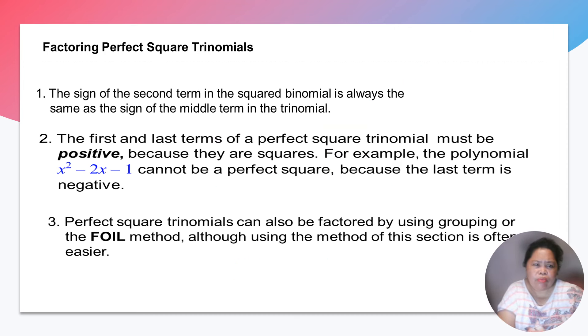Now let's have this one. So how do we factor perfect square trinomial? So first, the sign of the second term in the squared binomial is always the same sign of the middle term in the trinomial. The first and last terms of the perfect square trinomial must be positive because they are square. So for example, the polynomial x squared minus 2x minus 1 cannot be perfect square because the last term is negative. Perfect square trinomials can also be factored using grouping or the FOIL method, although using the method of the sections is often easier.